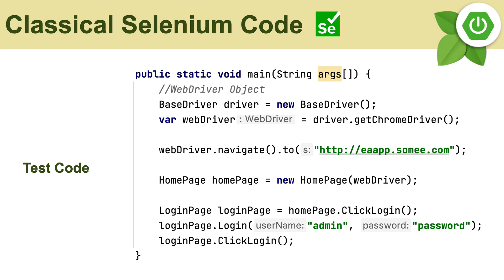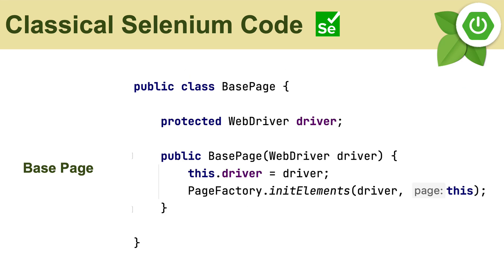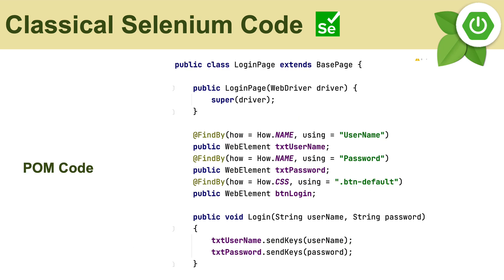This code looks pretty much like a Page Object Model code and it's going to have a base page with a protected WebDriver driver field. The base page constructor will initialize the Page Factory to init elements for any page. This base page has to be extended by other pages like the login page, which sets up a constructor for the WebDriver and passes it to super — the base page — with the rest of the Selenium code following similarly.